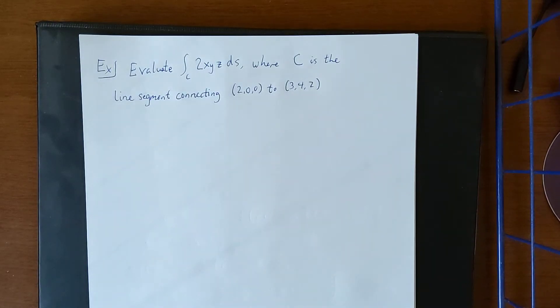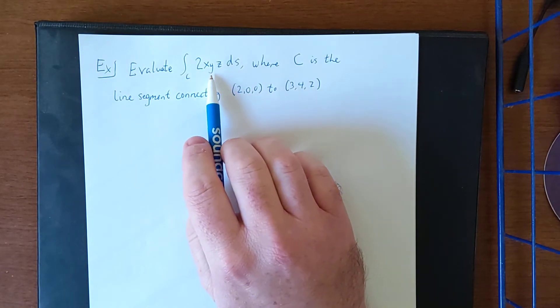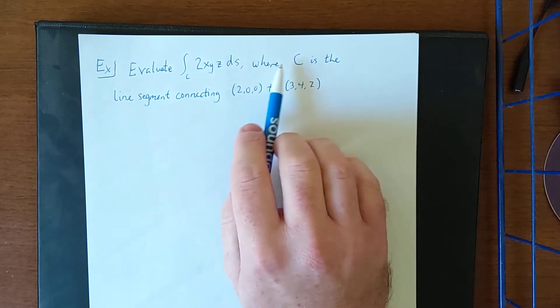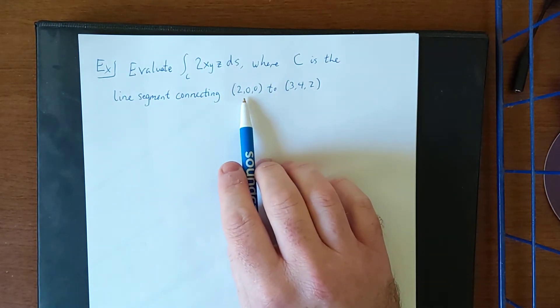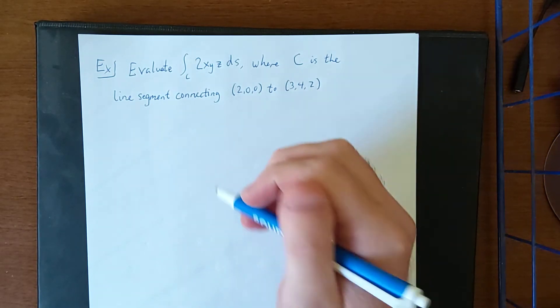I'd like to consider the following example of a line integral for a space curve. I'd like to evaluate the line integral over the curve C of 2xyz ds, where C is the line segment connecting (2,0,0) to the ordered triple (3,4,2).